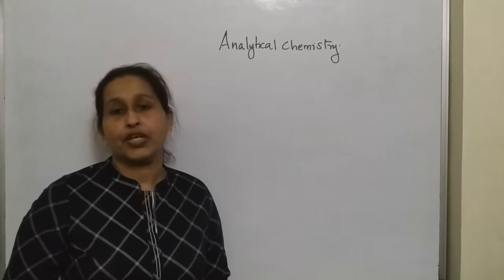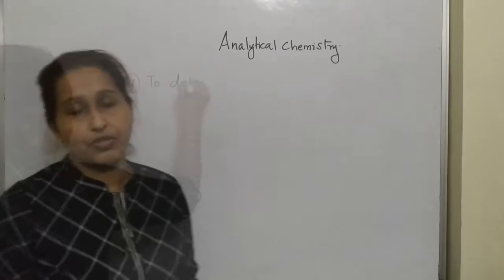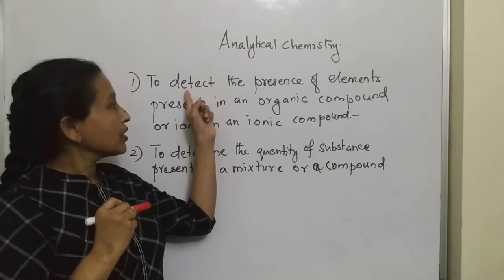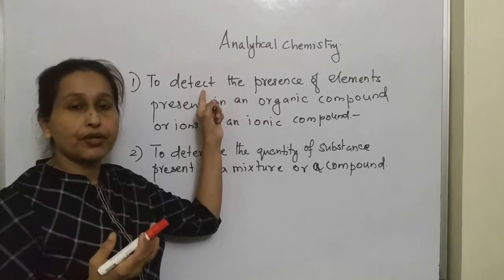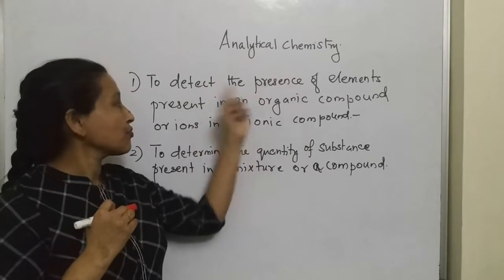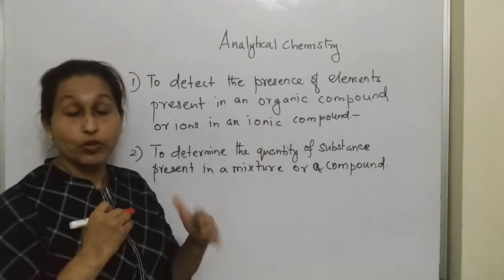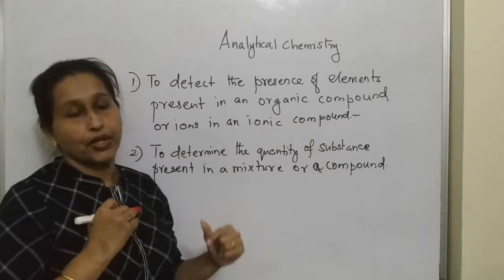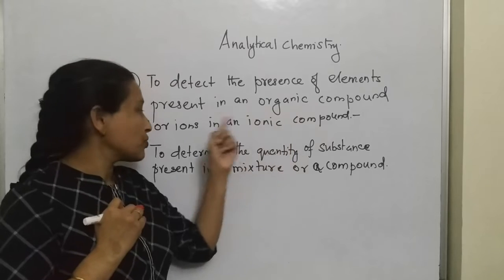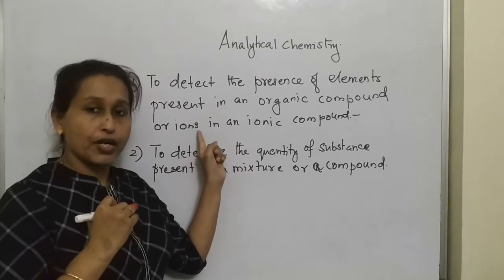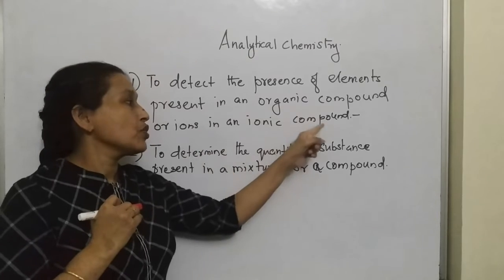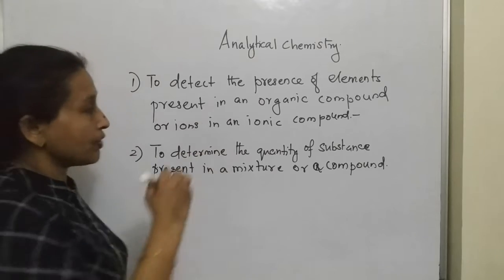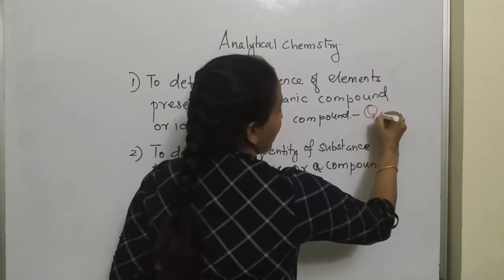Thus we can say that there are two types of analysis. The first one — we detect. Detect means to identify the presence of elements present in an organic compound; we will identify which elements are present in an organic compound, or ions in an ionic compound. Because ionic compounds are made up of positively and negatively driven ions, so we will identify the ions present in an ionic compound. And this we call qualitative analysis.